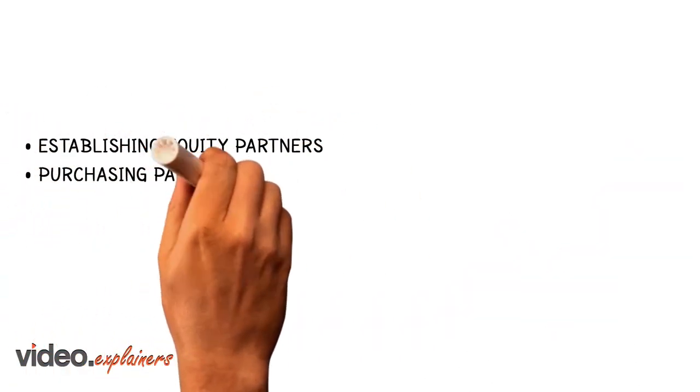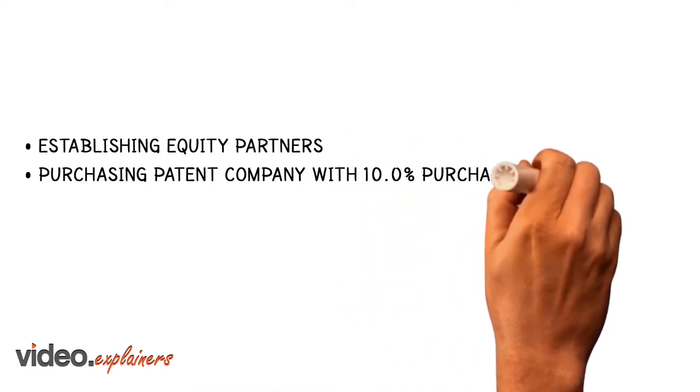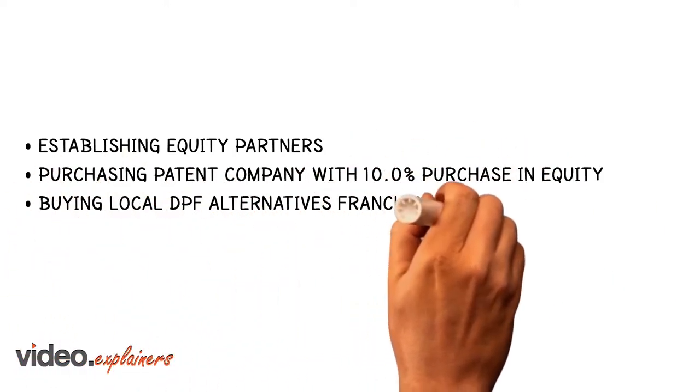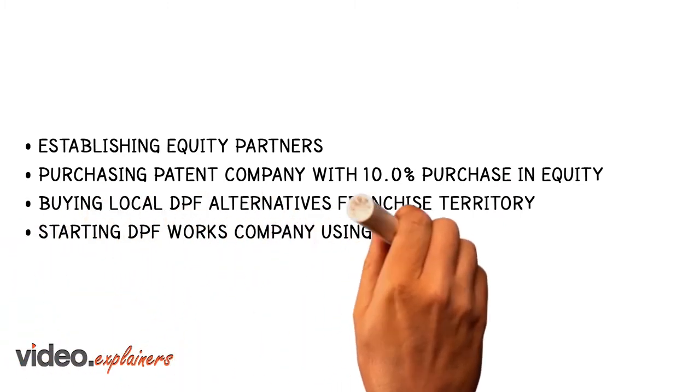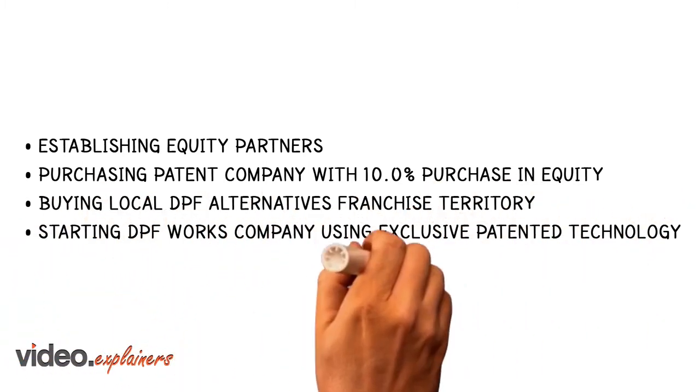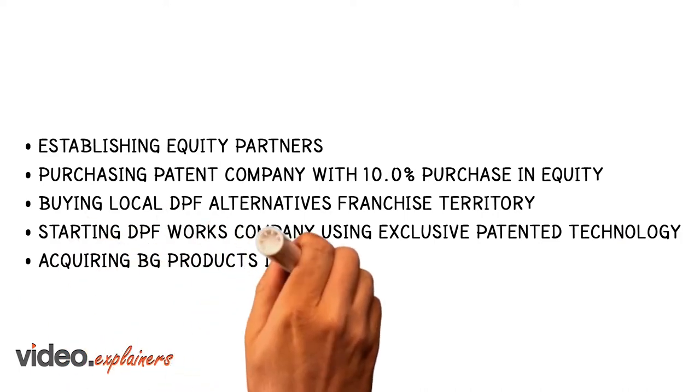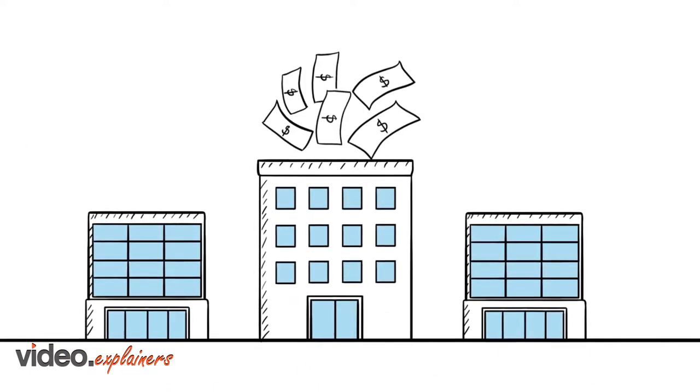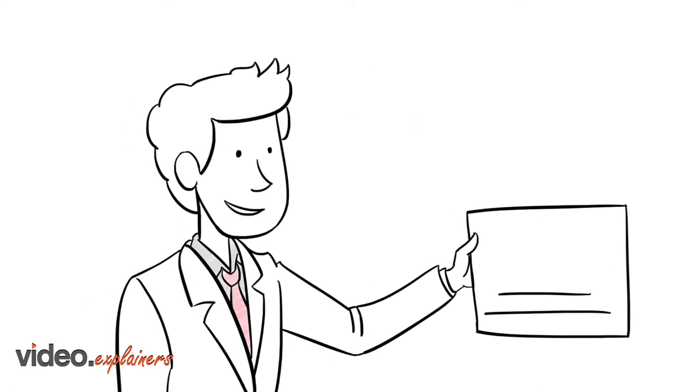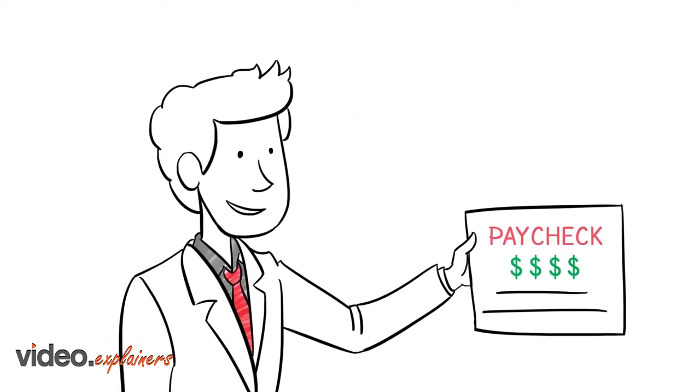purchasing patent company with 10% purchase in equity, buying local DPF Alternatives franchise territory, starting DPF Works Company using exclusive patented technology, acquiring BG Products Distributorship. We are building all these companies to have our pulse on the industry we feel best serves us to scale and sell.